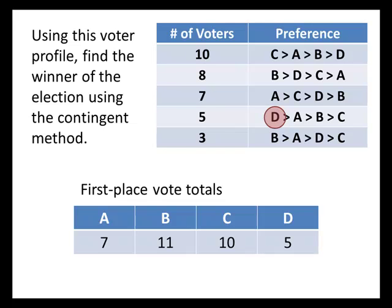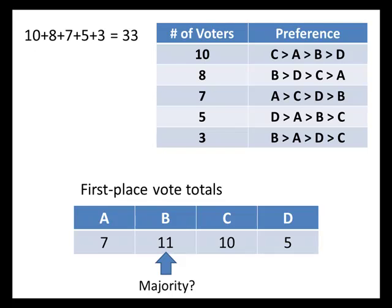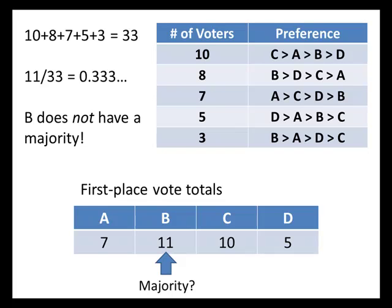B has the most first place votes, but does B have a majority? If so, B is the contingent winner. We need to know how many total voters there are — adding up the left-hand column: 10 plus 8 plus 7 plus 5 plus 3 gives us 33 total voters. B got 11 out of 33, which is around 33% of the vote. B would have needed more than 50% to be declared a majority winner, so B does not have a majority.